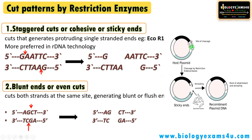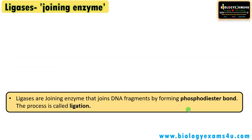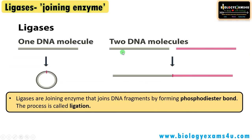Sticky ends are preferred in recombinant DNA technology because if the gene of interest and the vector both have sticky ends, they can easily anneal — the single-stranded regions form hydrogen bonds readily. Moving to ligases: ligases are called the molecular glue in recombinant DNA technology, as they seal or join two DNA fragments by forming phosphodiester bonds. This process is called ligation.